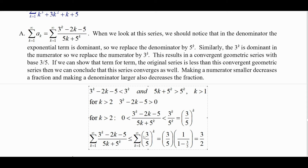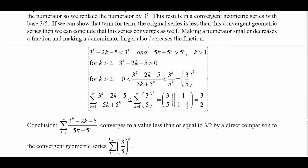We know that the infinite sum has to be less than or equal to the sum of that known geometric series. The sum of (3/5)^k equals the first term times 1 over (1 minus the base). Since 1 minus 3/5 is 2/5, dividing by that means multiplying by 5/2, and the 5's cancel giving 3/2. So this series converges to a value less than or equal to 3/2 by direct comparison to the convergent geometric series.